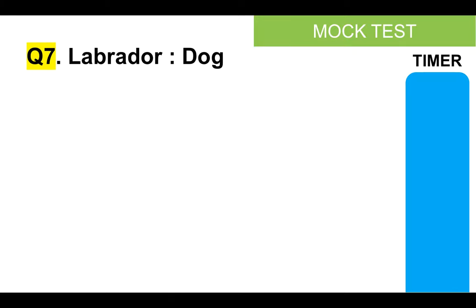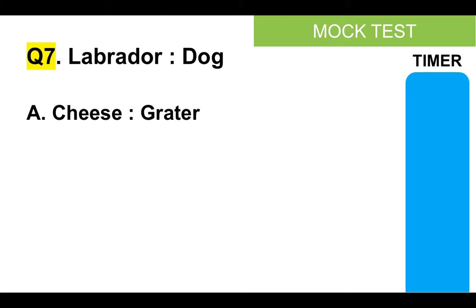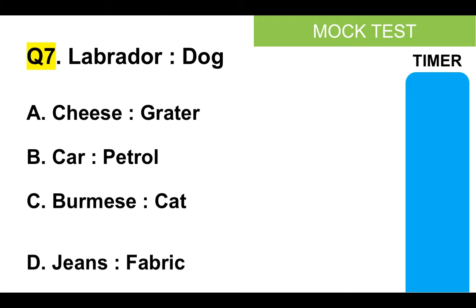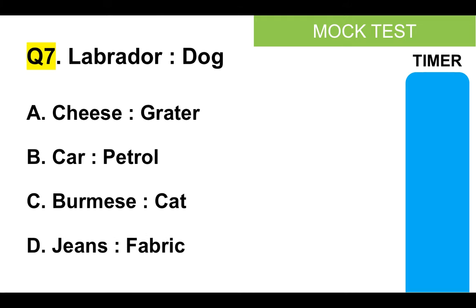Question number seven of your mock test: Labrador and dog. Is it A, cheese and grater; B, car and petrol; C, Burmese and cat; or D, jeans and fabric? Here's your timer.